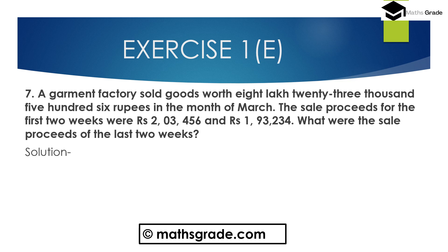Question number 7: A garment factory sold goods worth 8 lakh 23,566 rupees in the month of March. The sale proceeds for the first two weeks were 2 lakh 3,456 and 1 lakh 93,234.